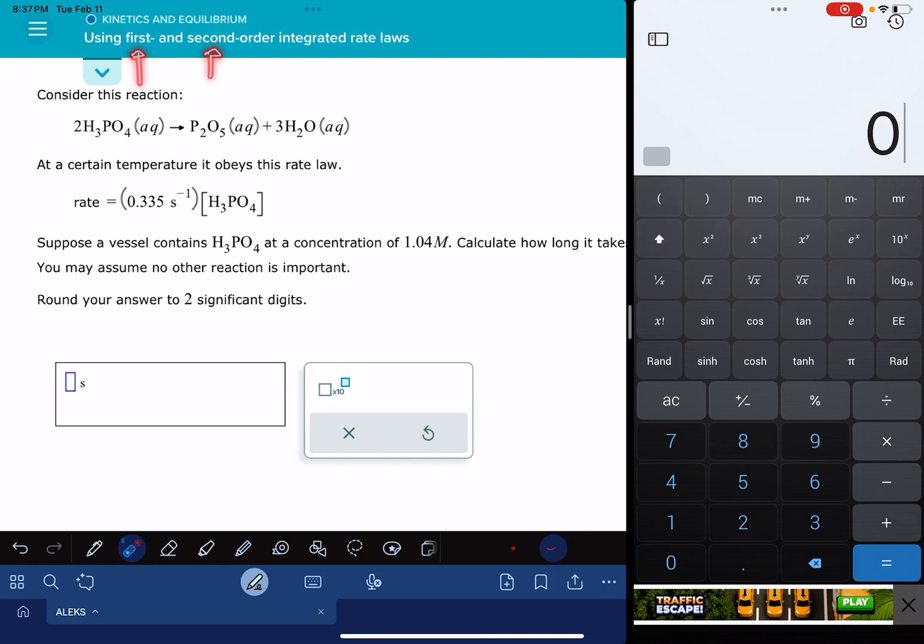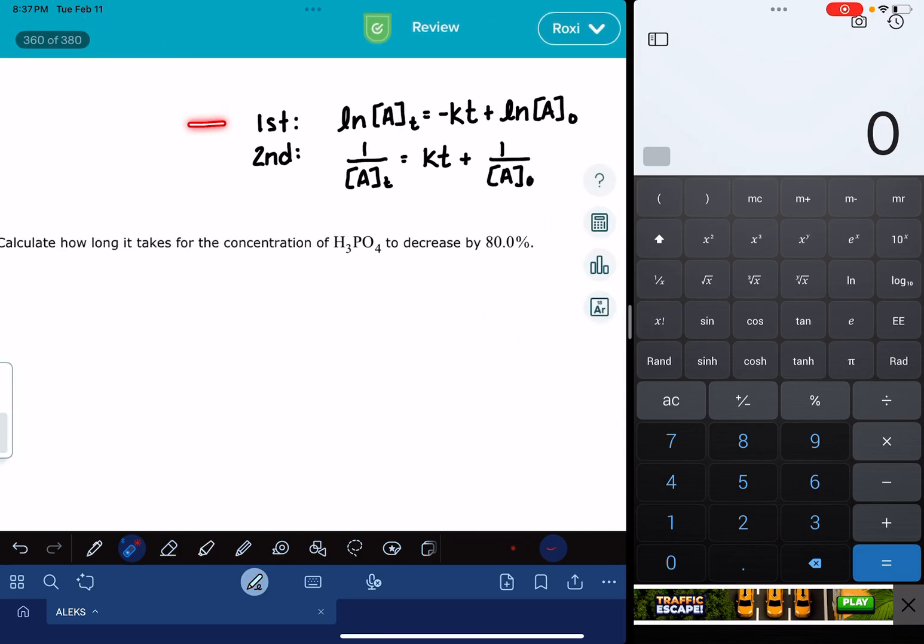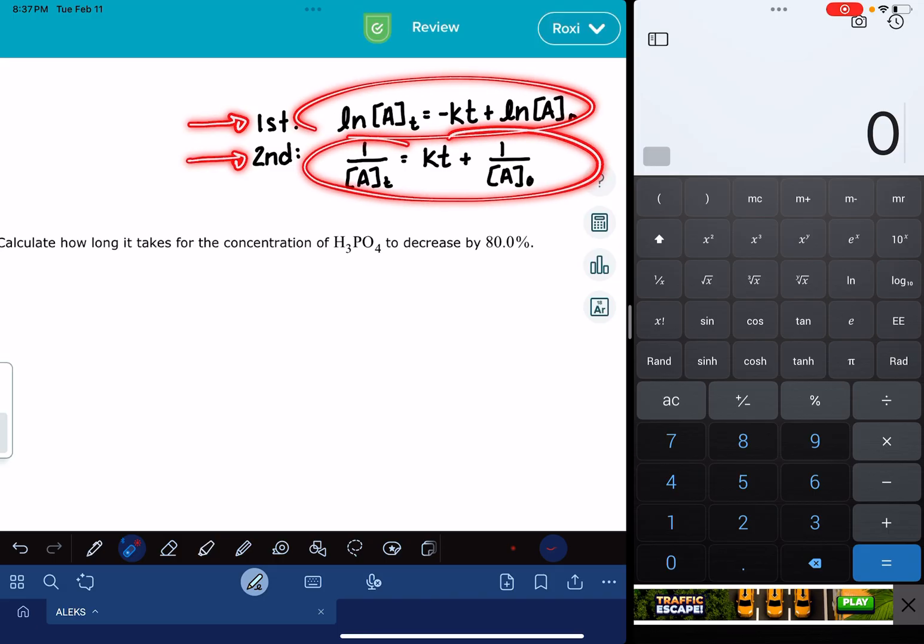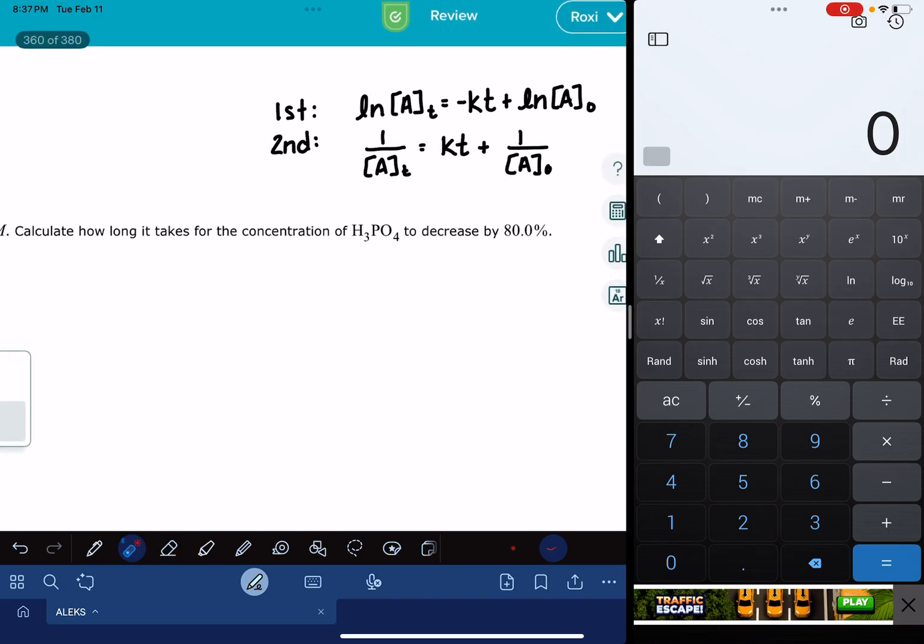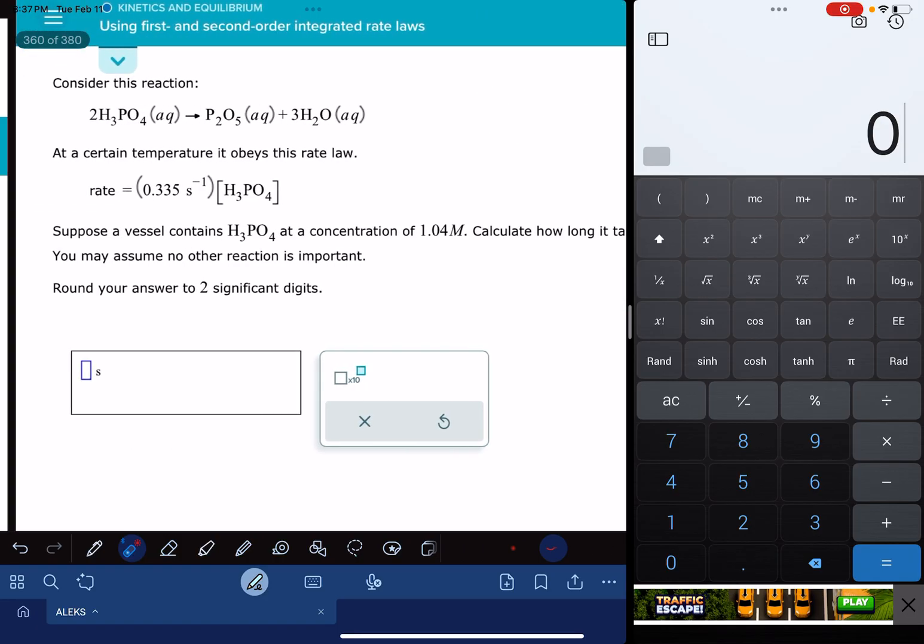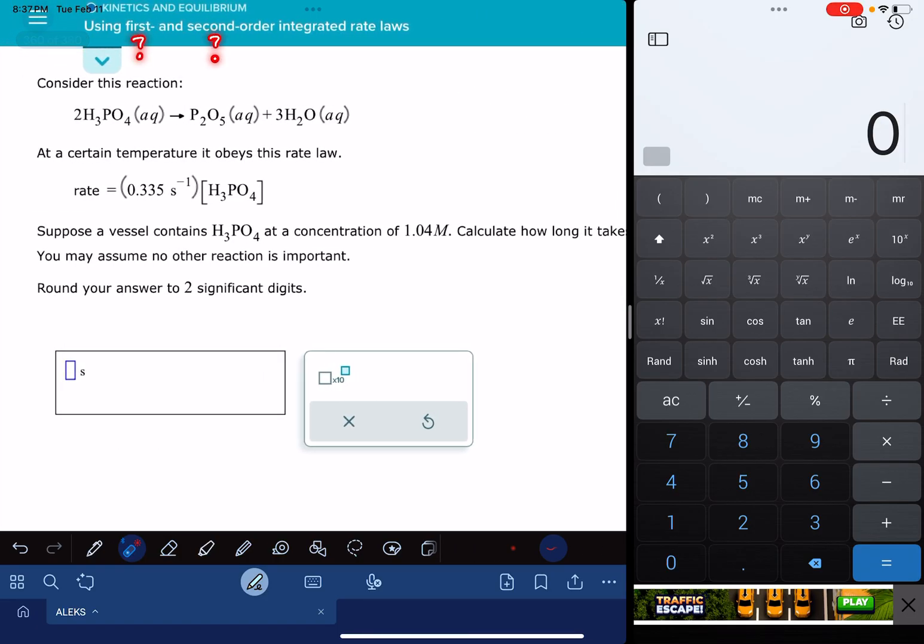So as the title of the problem implies, we're going to be using either the first or second order integrated rate law to solve this problem. And here they are. This is the first order integrated rate law. This is the second order integrated rate law. I do want to say that different textbooks might display these integrated rate laws slightly differently, so your version of the integrated rate law might look a little bit different than mine. In order for us to be able to solve this problem correctly, our first job is to figure out which integrated rate law we should be using. And to do that, we need to determine whether we have a first order reaction or a second order reaction.